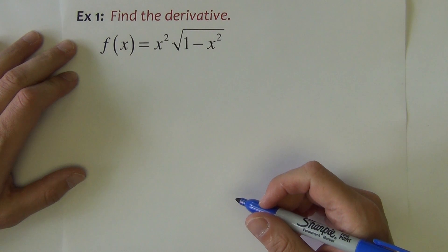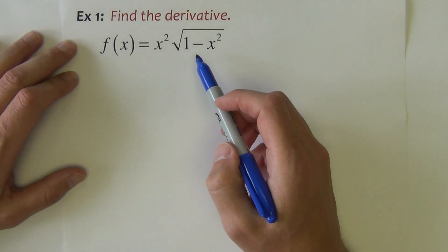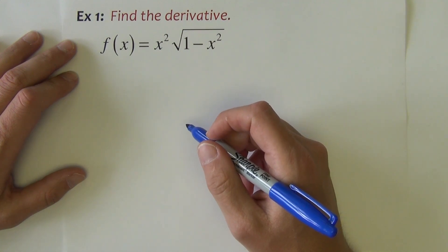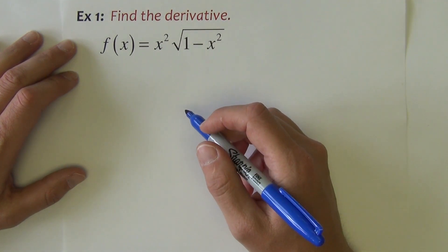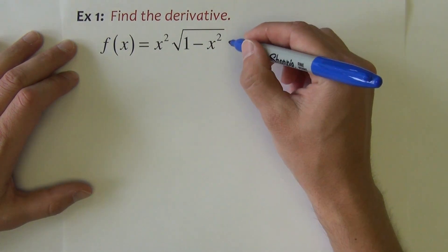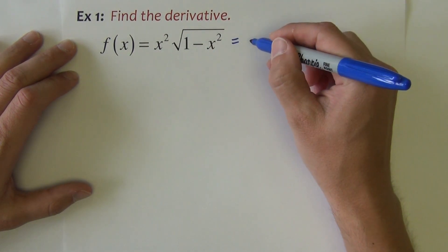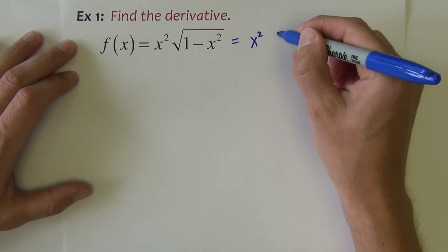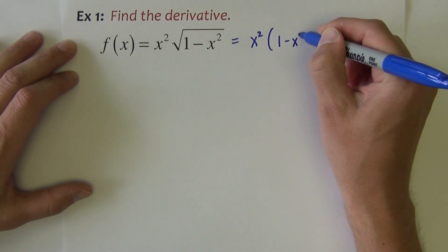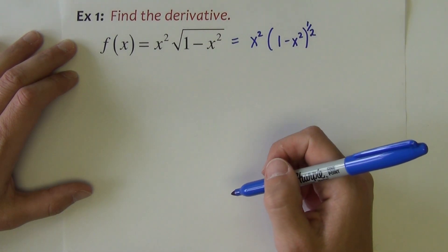First example: find the derivative of x squared times the square root of 1 minus x squared. The first thing I'm going to do — as I'd always do any time I have radicals and want to take the derivative — is rewrite the expression using powers. So this is x squared times the quantity (1 minus x squared) to the 1/2 power.